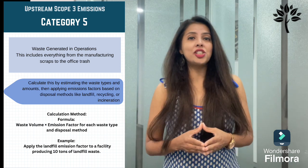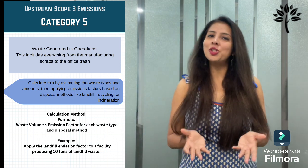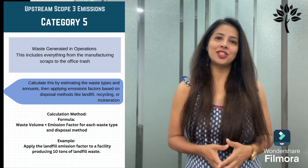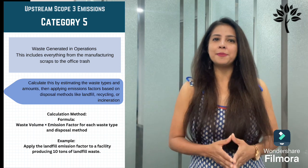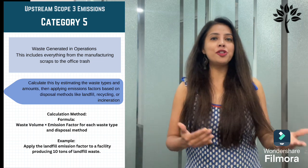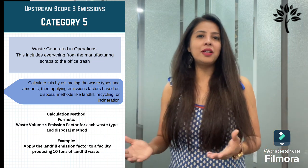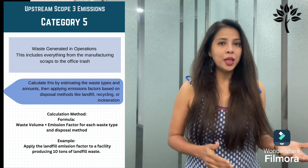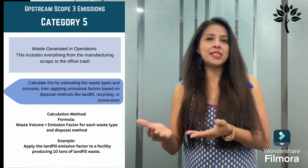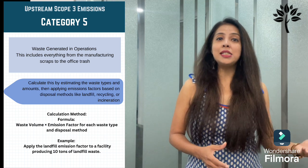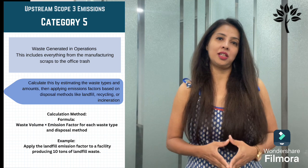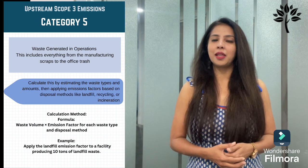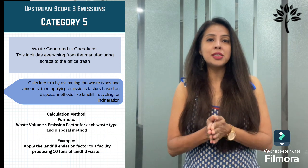Category 5 is waste generated in operations — everything from manufacturing scraps to office trash. Calculate this by estimating waste types and amounts, then applying emission factors based on disposal methods like landfill, recycling, or incineration. The calculation method is: waste volume × emission factor for each waste type and disposal method. Activity data is the volume or weight of waste generated. Emission factors vary for landfills, recycling, and incineration.